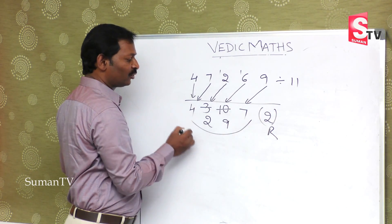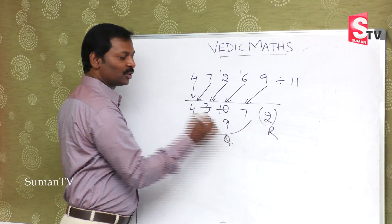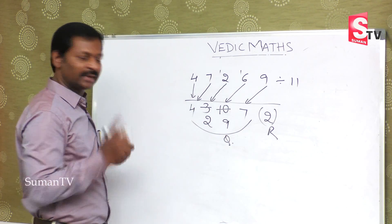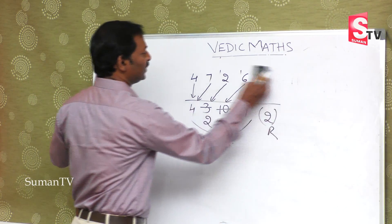So this will be the remainder, and 4297 is the quotient. Have you understood? I will give you one more example then you can understand.